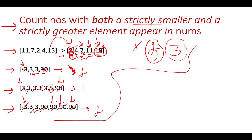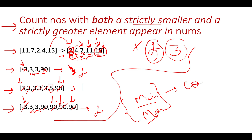Now let's talk about the approach. The first approach is simple: find the minimum element and the maximum element and store them in two variables. Then iterate through the array — if the current element lies strictly within the range of those two values, increment the count variable; otherwise skip it. At the end, return the count variable.